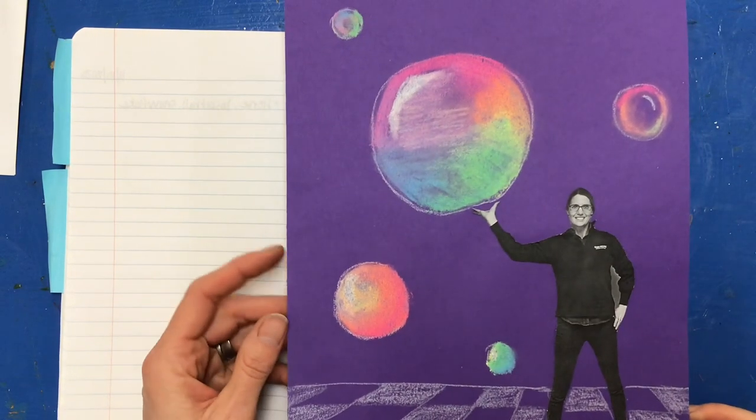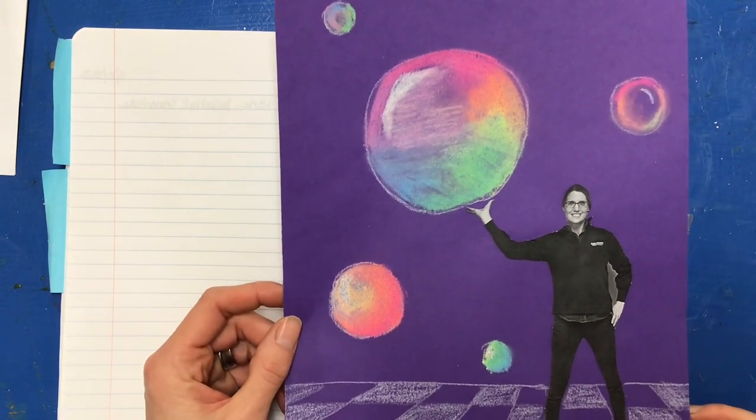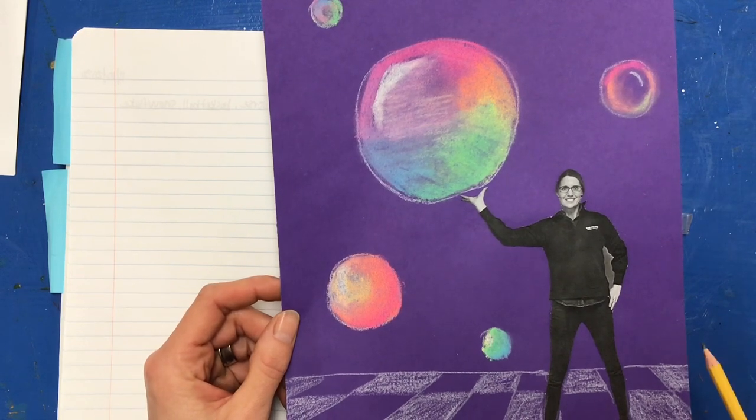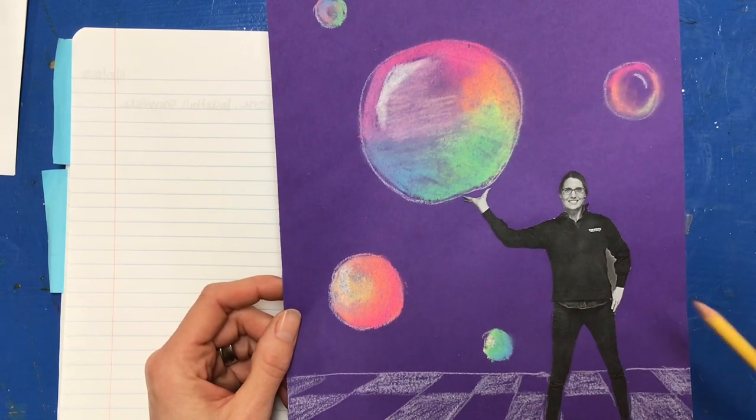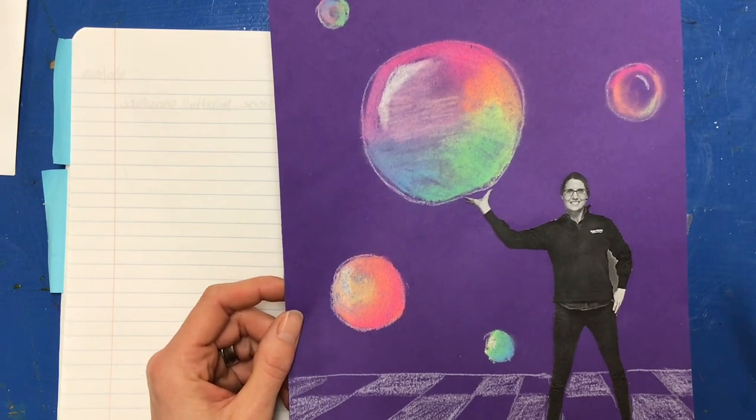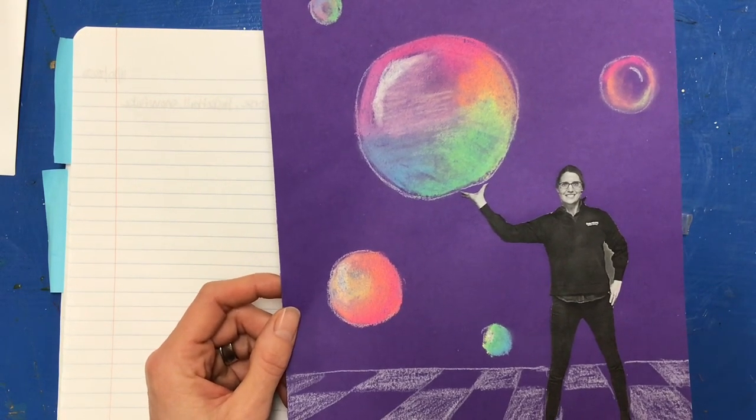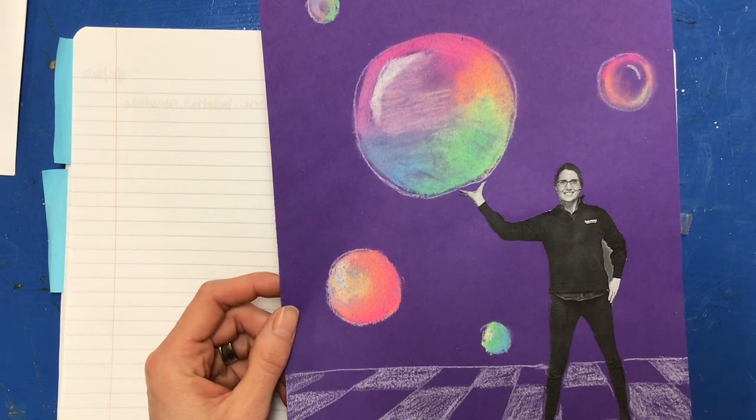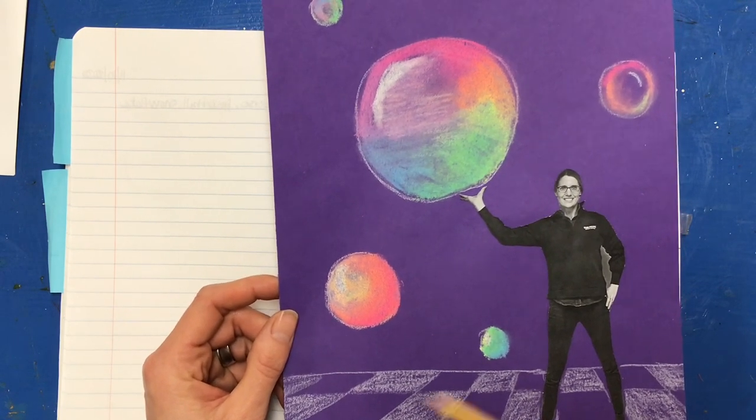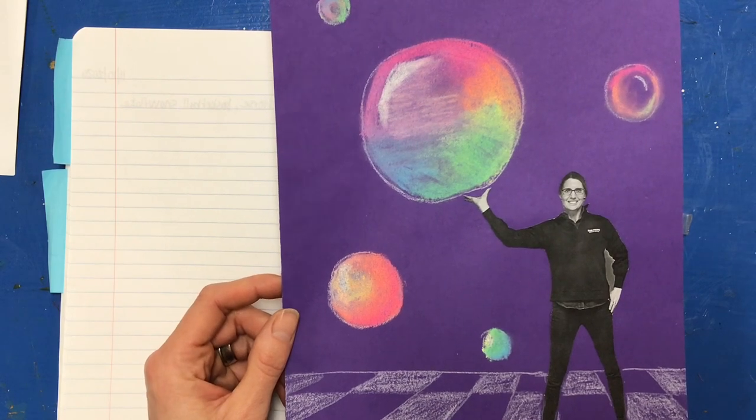So today we're going to start planning our chalk bubble collage. We're going to create in this project an environment that has a cutout picture of you interacting with five to nine different bubbles. We would like you to include a ground or a floor that has perspective. So we're going to talk about how to draw that today in our plan.